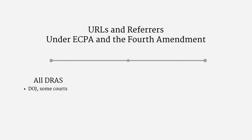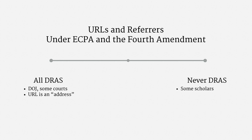The basic argument is straightforward. It says a URL is just a web address. DRAS includes addressing, so URLs are covered by the Pen Register Act. And URLs are knowingly given to a business, so they aren't covered by the Fourth Amendment under the Third Party Doctrine. That's the view at one end. The perspective at the other end is that URLs and referrers are never DRAS — a view that's had some popularity among scholars, though to my knowledge, no court has expressly adopted it.